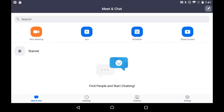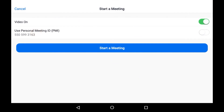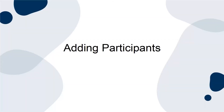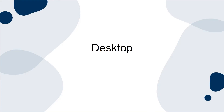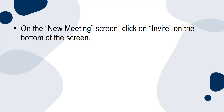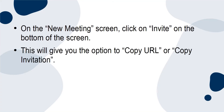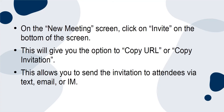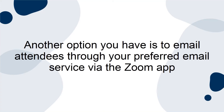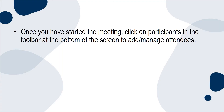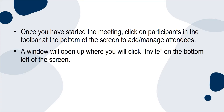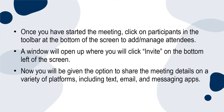For mobile, open the app and log into your account, tap the New Meeting icon, edit the settings based on your preferences, and click Start Meeting once you're done. To add participants on desktop, click on Invite at the bottom of the New Meeting screen — this gives you the option to Copy URL or Copy Invitation, allowing you to send the invitation via text, email or IM. Another option is to email attendees through your preferred email service via the Zoom app. For mobile, once you've started the meeting, click on Participants in the toolbar at the bottom of the screen. A window will open where you click Invite on the bottom left, and you'll be given the option to share the meeting details on a variety of platforms including text, email, and messaging apps.